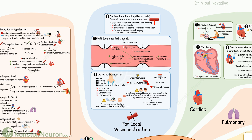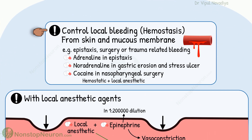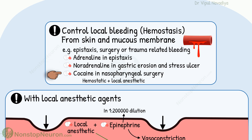Now let's talk about uses where local vasoconstriction is needed, starting with control of local bleeding from the skin and mucous membrane — for example, epistaxis, surgery, or trauma-related bleeding. Adrenaline is used in epistaxis, and noradrenaline is used in gastric erosion and stress ulcers. Cocaine is sometimes used in nasopharyngeal surgery because of its additional local anesthetic action.